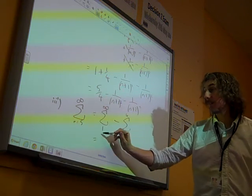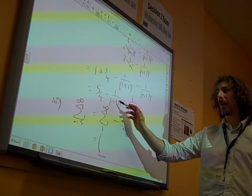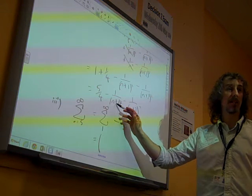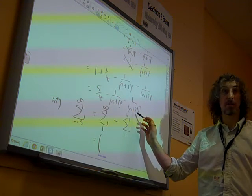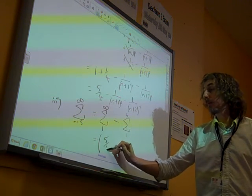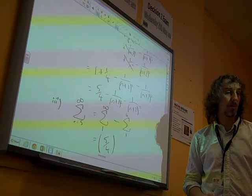if, as we go to infinity, the first bit, well, that bit goes to 0 as n gets bigger. That bit goes to 0 as n gets bigger. So the sum to infinity is 5 over 4.